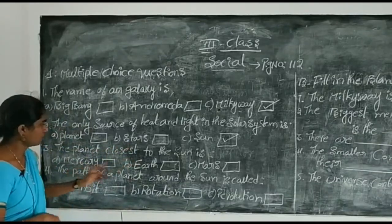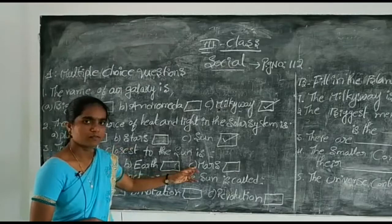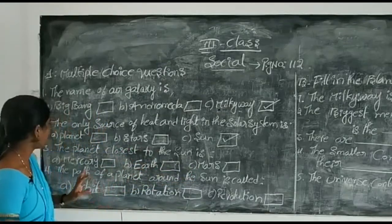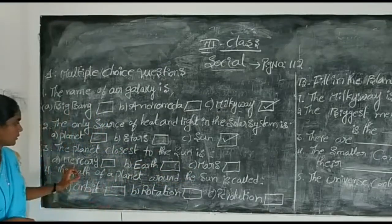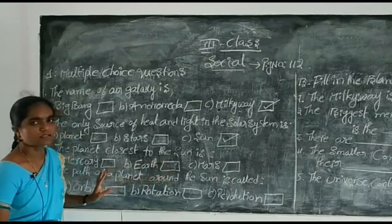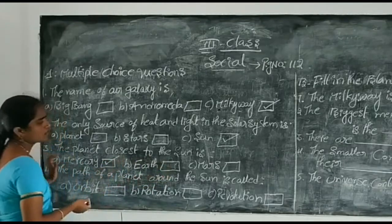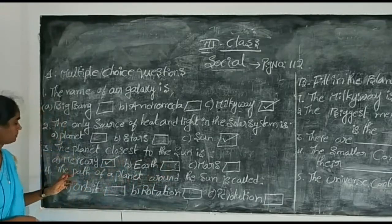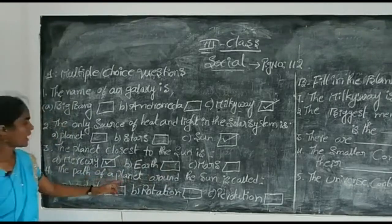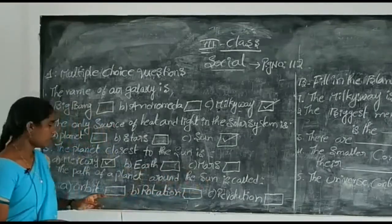The planet closest to the sun is which one? Mercury, Earth, or Mars? Which one is closest to the sun? Mercury is the closest to the sun.